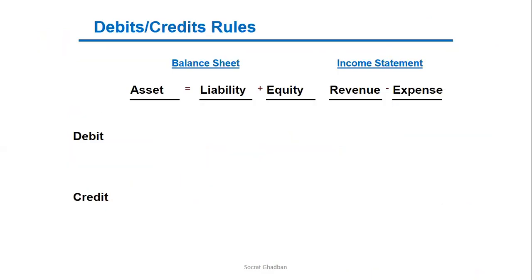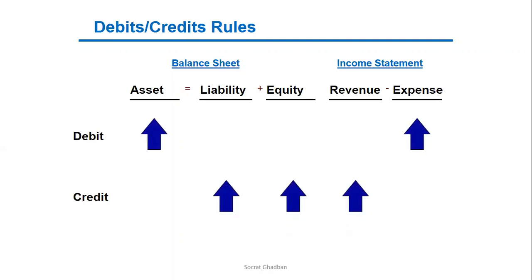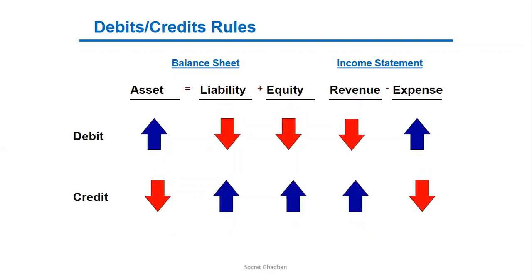In order to summarize all these transactions, we have this table. The normal balance of an asset is debit, and the normal balance of an expense is also debit. The normal balance of liability, equity, and revenue is credit. So they increase based on these debit and credit sides. However, on the opposite side, they will decrease. Like this, you have a summary of all the accounts and how debit and credit can affect them.